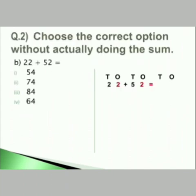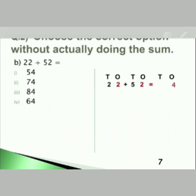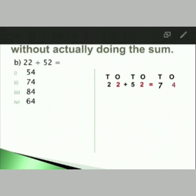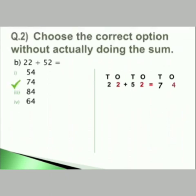Let us go to the second one. Question B: 22 plus 52 is equal to how much? Again there are some options. First we will add the 1's number: 2 plus 2 is 4. Now the 10's number: 2 plus 5 is 7. So your answer is 74. So 22 plus 52 is equal to 74.